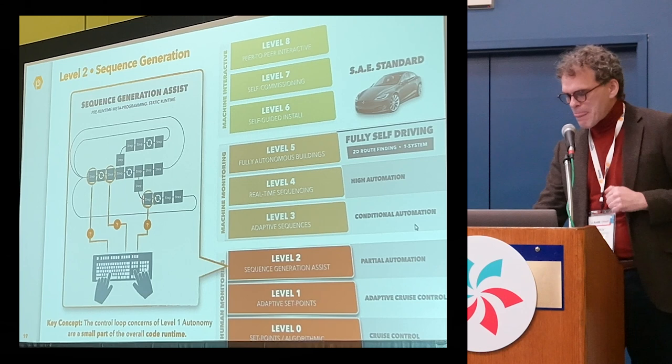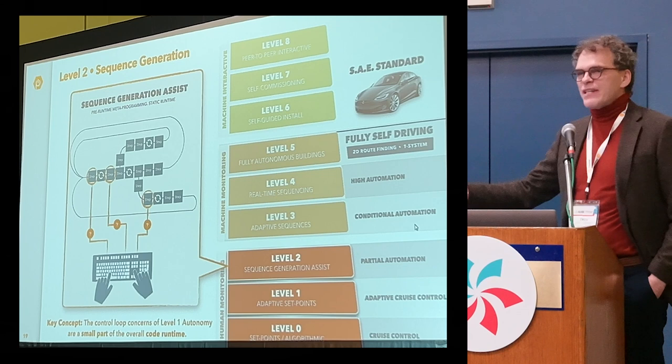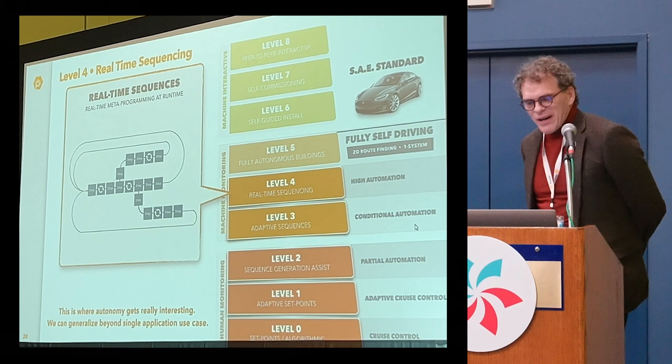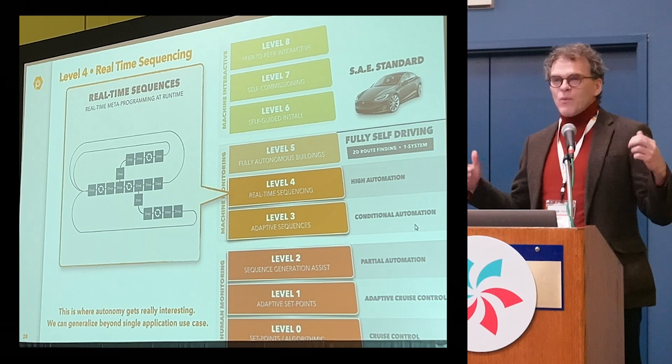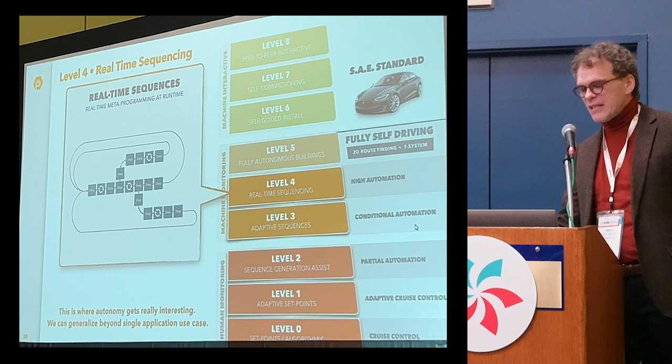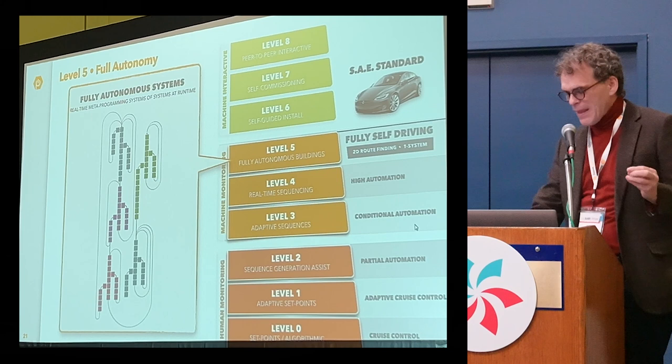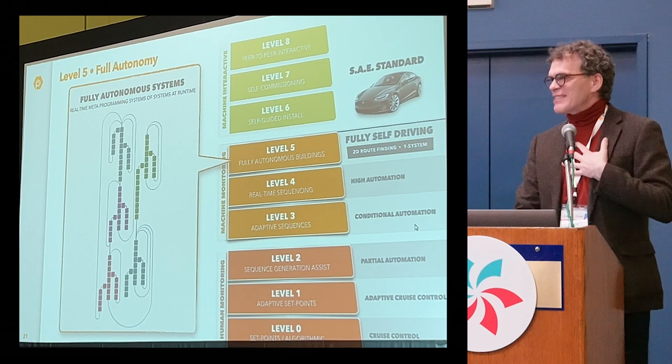Level two autonomy would be software that can generate sequences for us — we say what we want, it generates sequences, similar to what an LLM does. Level four is where it gets really interesting: real-time sequences where you describe what your building is and why, and your control system decides what to do in real time, generating its own sequences. Level five is full systems of systems. Buildings are more complex than other systems because they're not just one system — there are many systems working together. That makes buildings, from our point of view, the most interesting robotics challenge in the world.